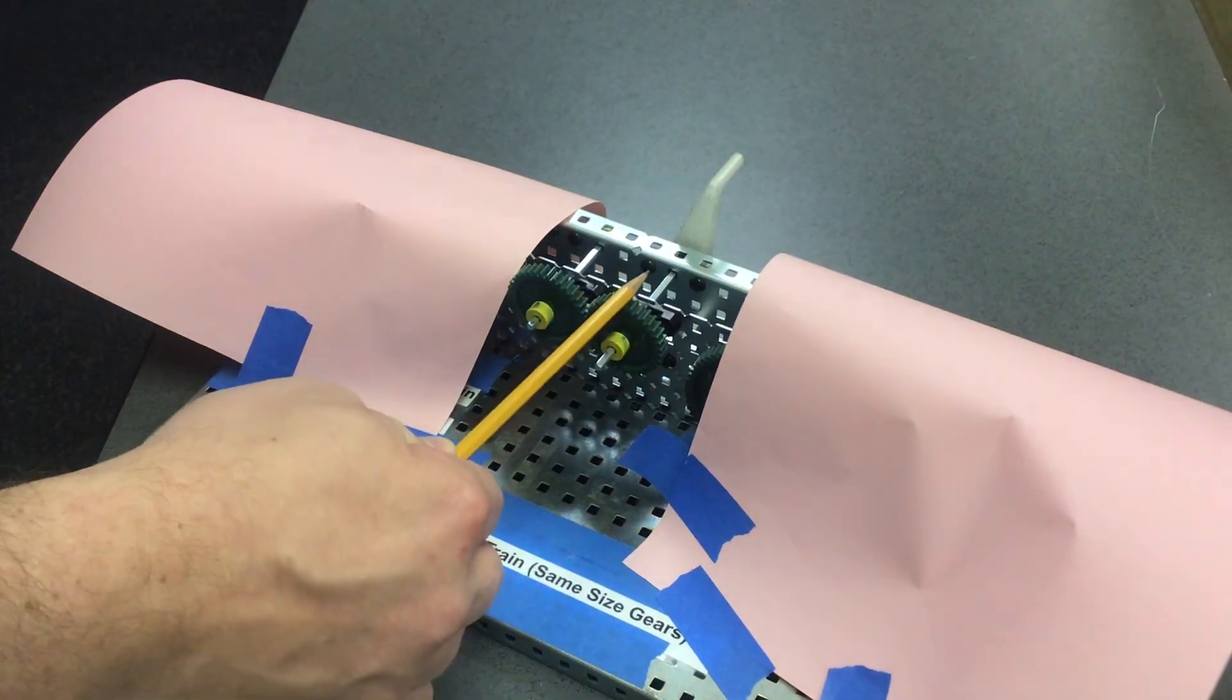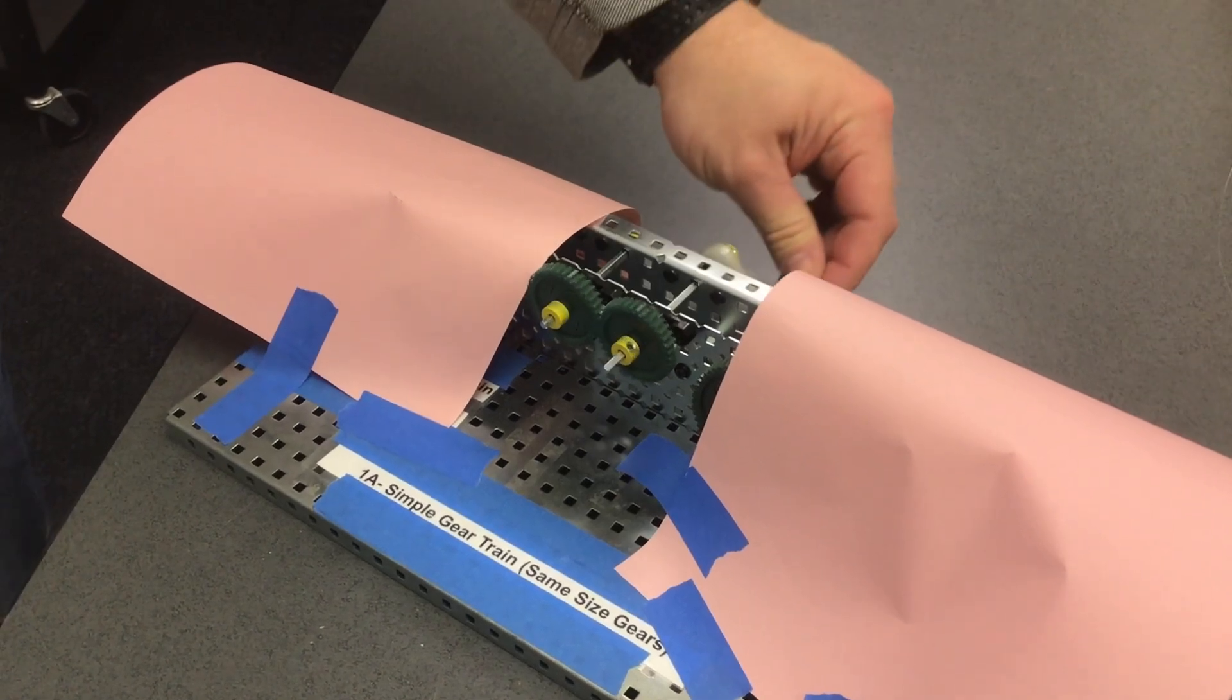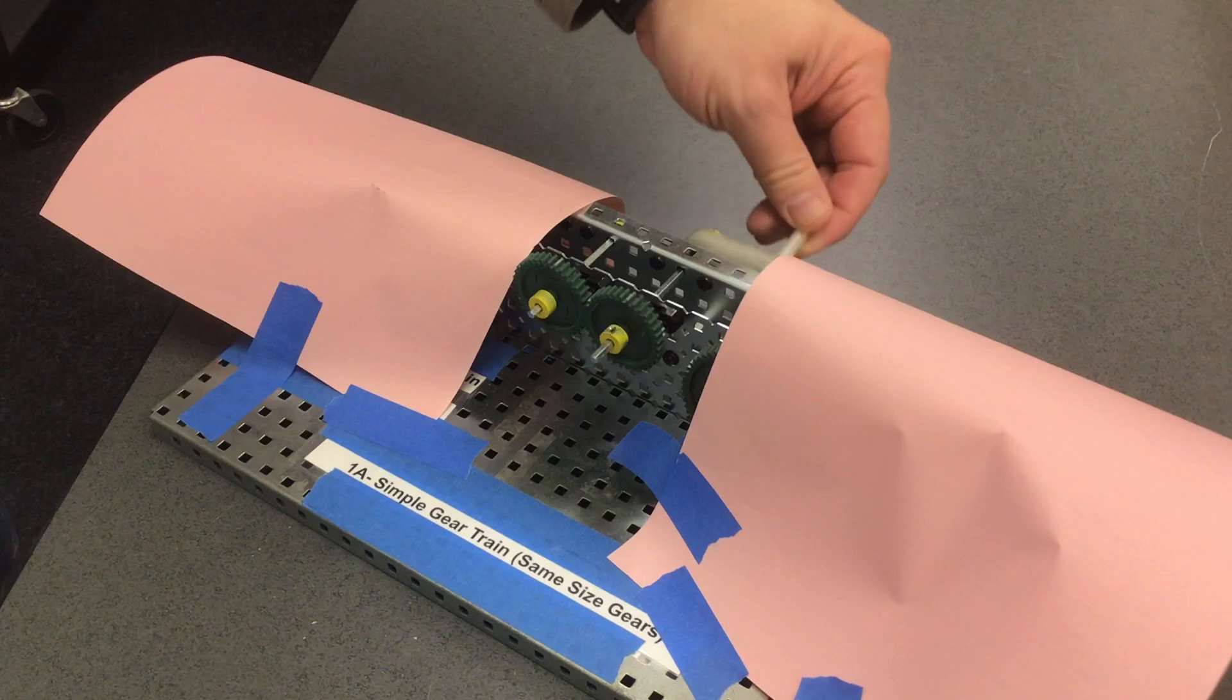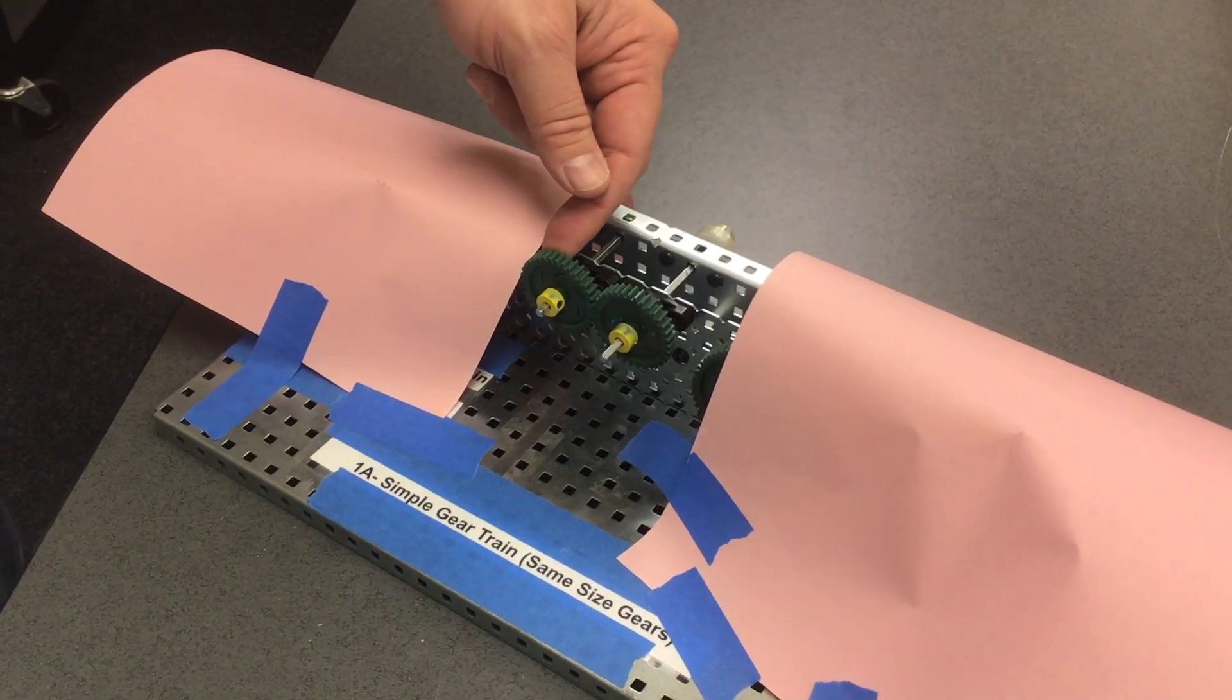The first gear has a hand crank attached to it. That hand crank when turned clockwise will turn the other gear counterclockwise.